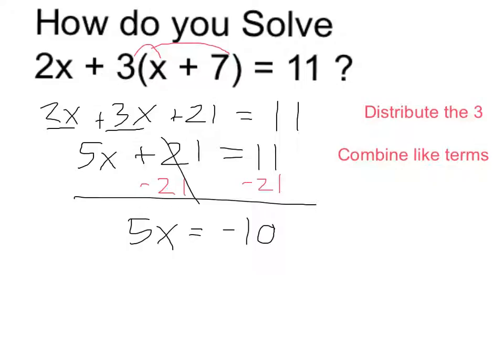And finally, to find out what x itself is, I can undo the multiplication by 5 by dividing by 5, and that's just going to leave me with x equals negative 10 over 5, which is negative 2. So I propose that negative 2 is my solution.